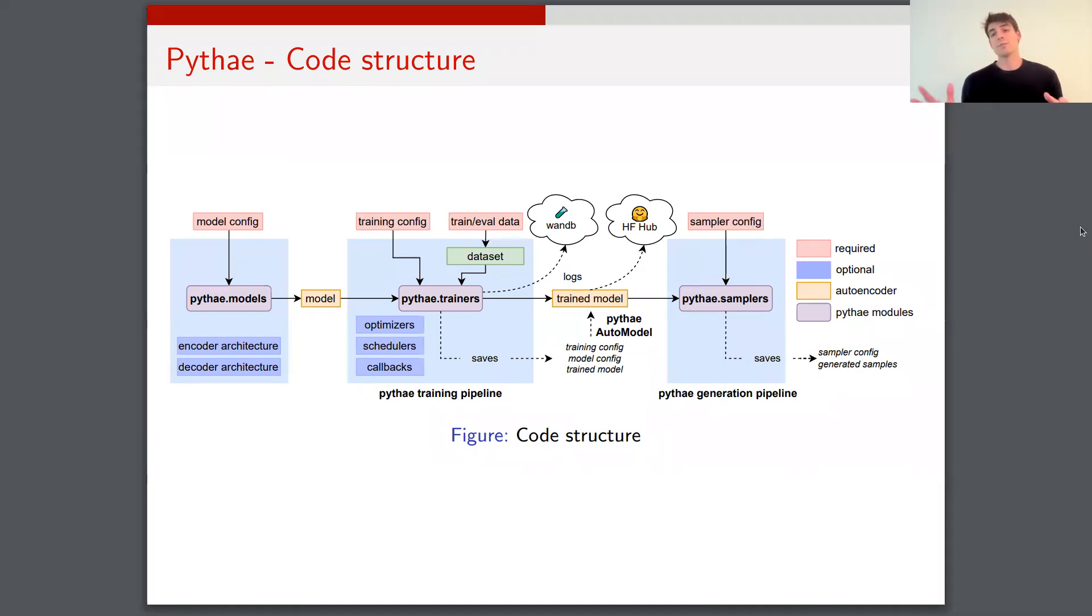And on the right, you've got the samplers that you can choose to generate data from a trained generative autoencoder. And you may find also other features such as experiment monitoring tools, such as Weights & Biases, CometML, and MLflow, that have been integrated into Pythae. And you can also share your trained model through the Hugging Face Hub.